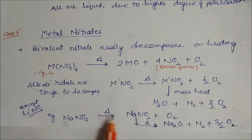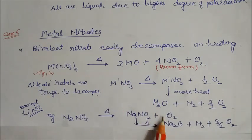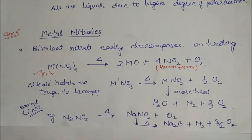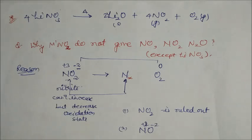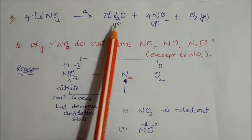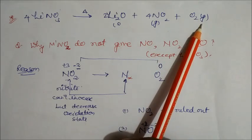Sodium nitrate on heating first forms sodium nitrite and oxygen. With more heat it gives sodium oxide plus nitrogen plus oxygen. Lithium nitrate on heating gives lithium oxide, nitrogen oxide, and oxygen.